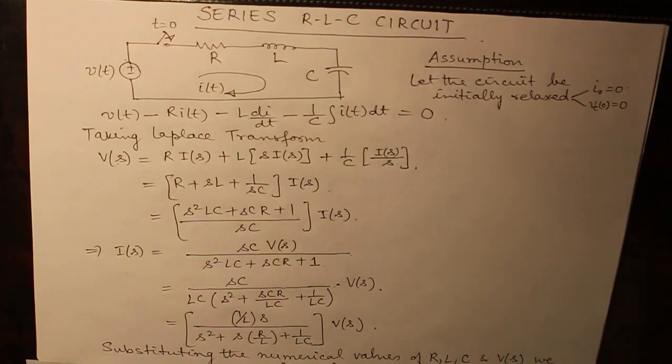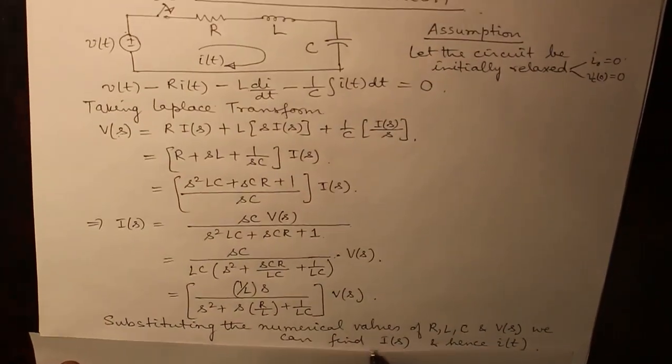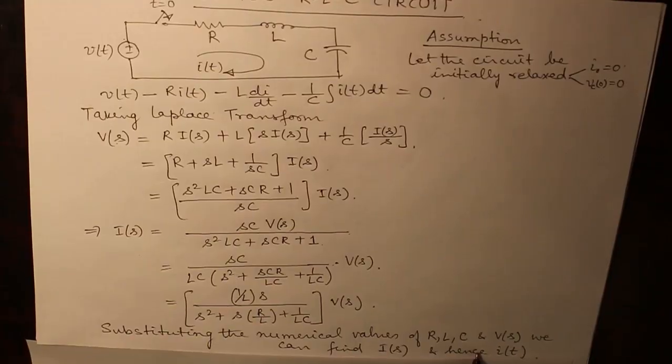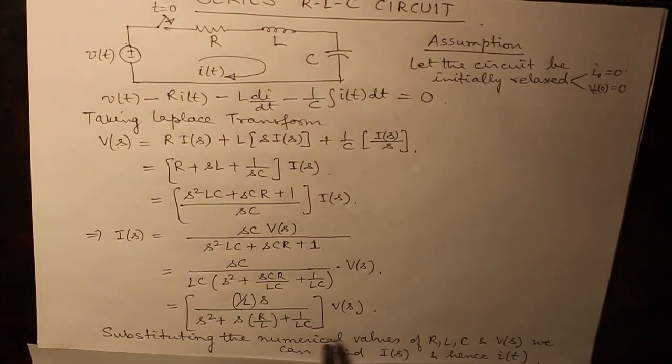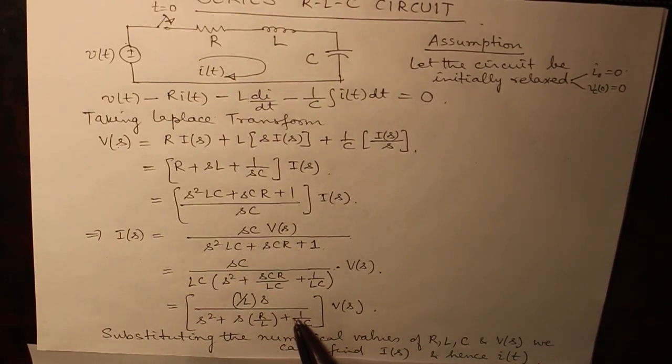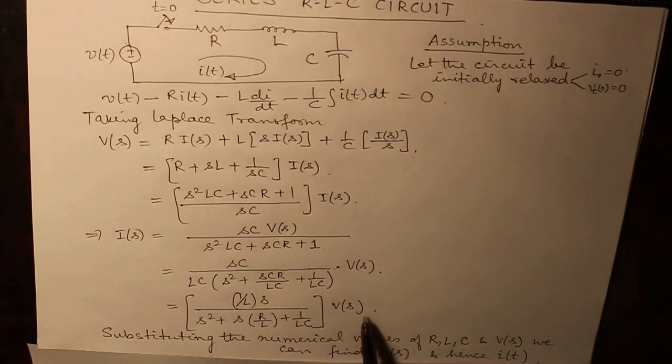Substituting the numerical values of R, L, C and V(s) we can find I(s) and hence I(t). Now instead of deriving from here because we don't know for what kind of V(s) we are going to derive the expression for I(t).